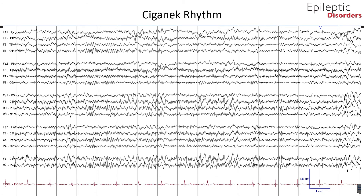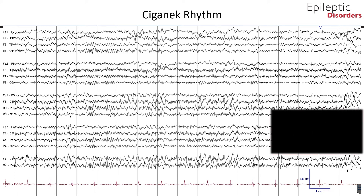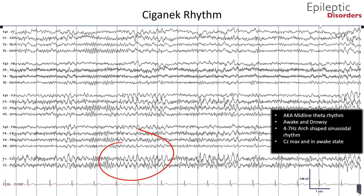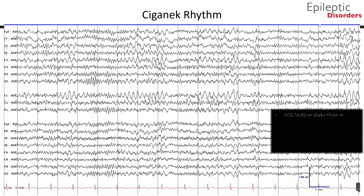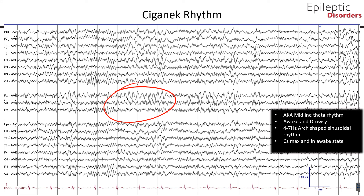The Ciganek rhythm, also known as midline theta rhythm, is seen during wakefulness and drowsiness. Similar to RMTD, the midline theta rhythm is typically a 4–7 Hz arc-shaped or sinusoidal rhythm that may at times be notched or flat-topped. The main difference in appearance from RMTD is the location, typically maximum over the CZ region, and the presence of Ciganek in the awake state. In this bipolar montage, you can see theta-range frequency maximum over the midline chains, especially over the central midline CZ. This is the same EEG shown in average montage, and you can see a midline theta rhythm with maximal amplitude over the CZ region. This is thought to be a normal variant.